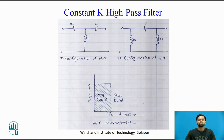The constant K high pass filter is exactly opposite to the low pass filter. The T configuration, phi configuration, and high pass filter characteristics are shown. In the series arm there are capacitors represented by the value 2C, and in the shunt arm there is an inductor. Due to the properties of the capacitor and inductor, low frequency signals are attenuated and high frequency signals are passed.